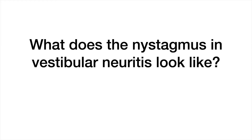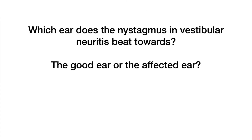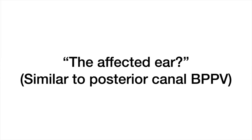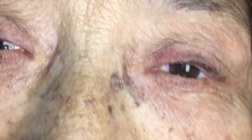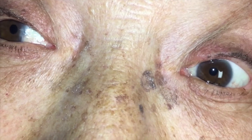When I ask my learners what the nystagmus in vestibular neuritis looks like, they usually say it's horizontal with a variable amount of torsional component, which is correct. Then I ask which ear it beats towards — the good ear or the affected ear — and they often get a deer-in-the-headlights look. They often guess it beats towards the affected ear, probably because in posterior canal BPPV, a positive Dix-Hallpike test demonstrates vertical, upward and torsional nystagmus towards the affected ear — the downward ear — as seen in this patient with right ear posterior canal BPPV.